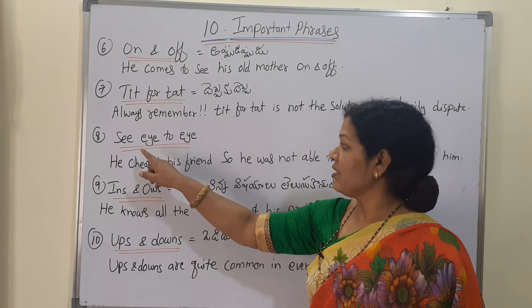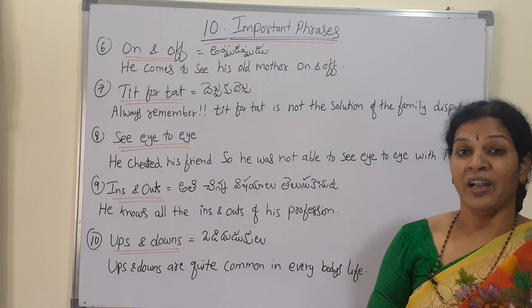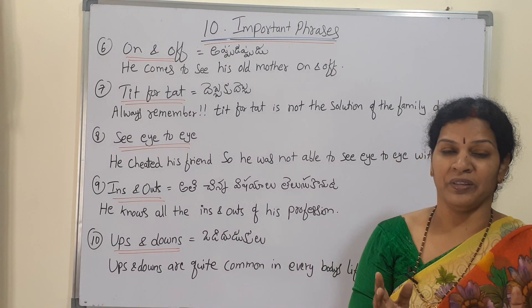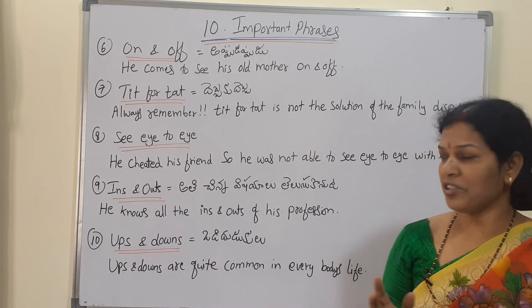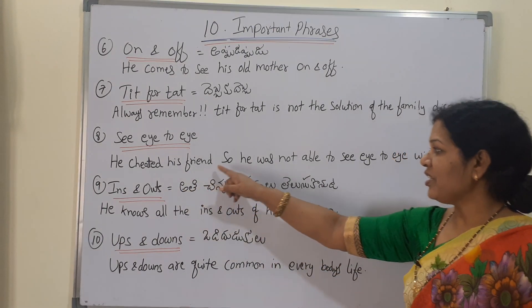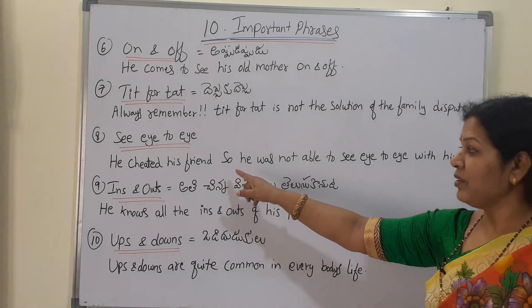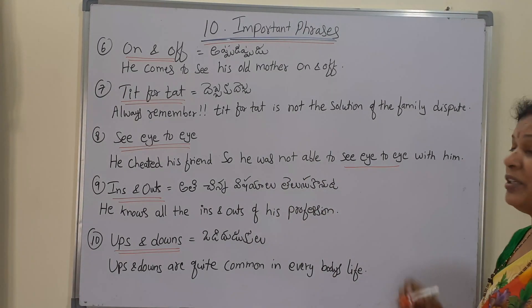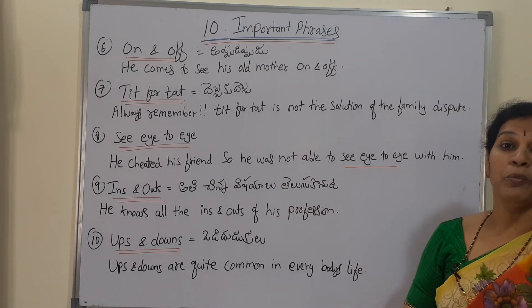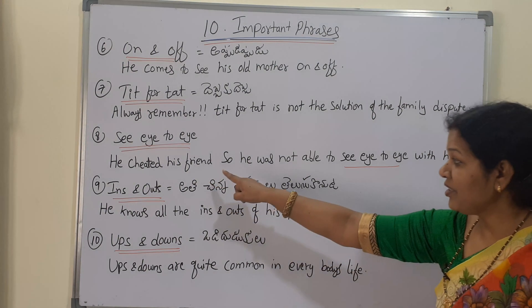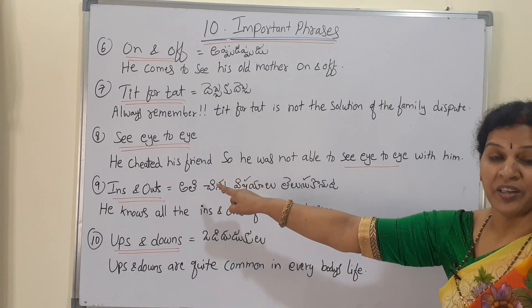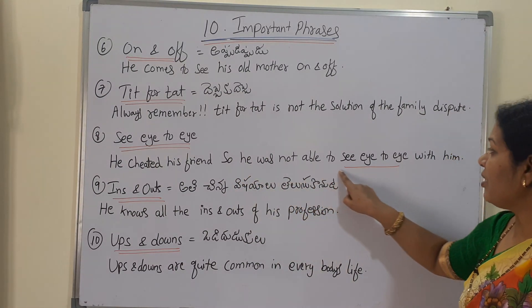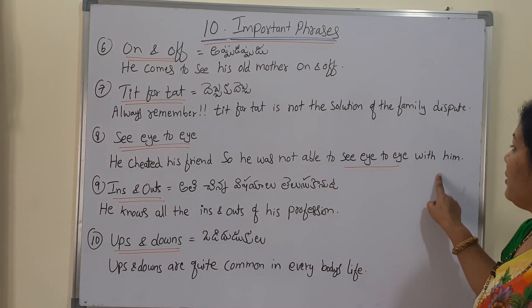Next: eye to eye. He cheated his friend, so he was not able to see eye to eye with him.